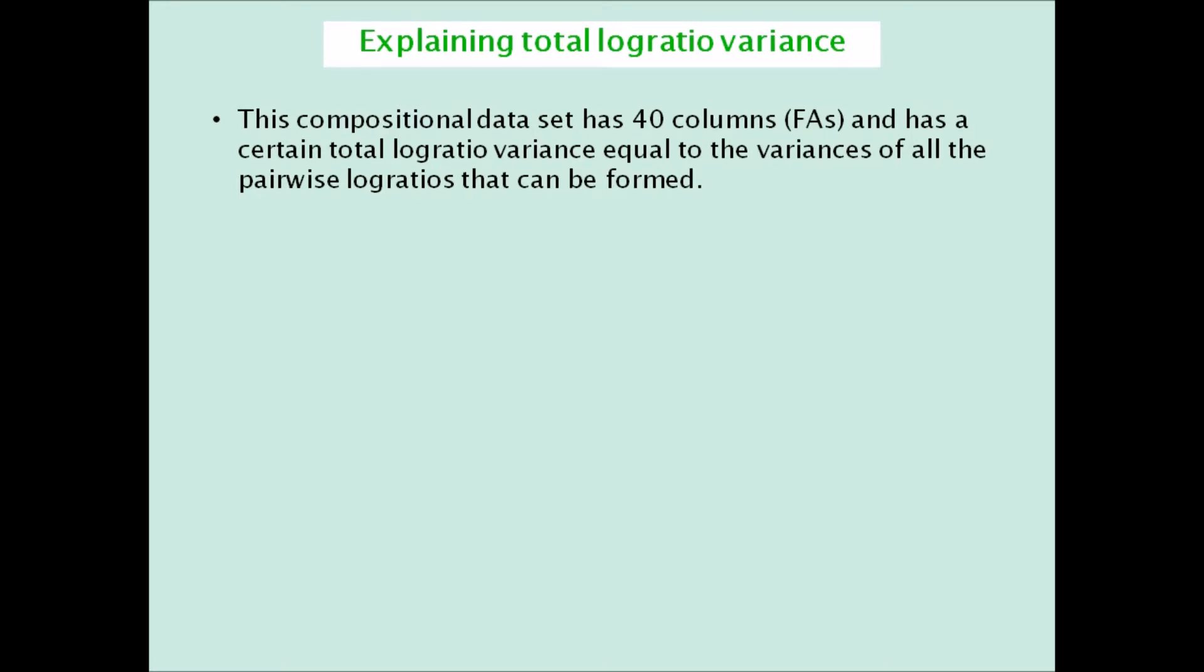In this example with 40 fatty acids, there are 40 times 39 over 2, that's equal to 780 unique pairs of fatty acids, and thus there are 780 different ratios.